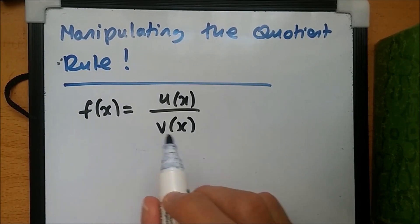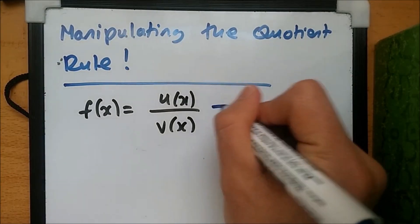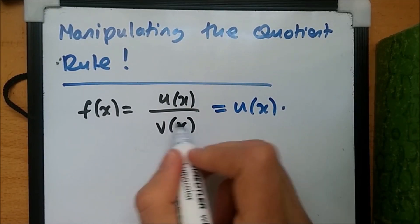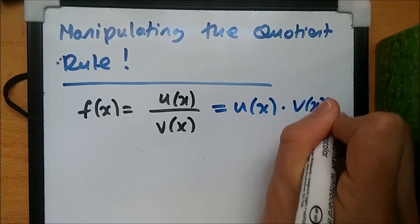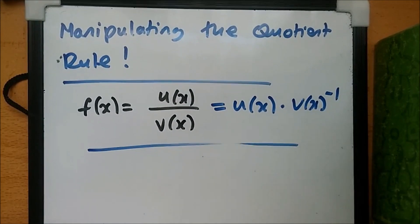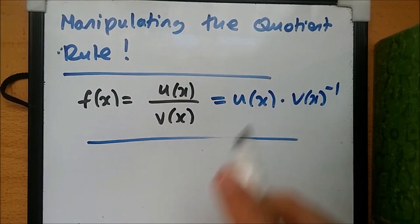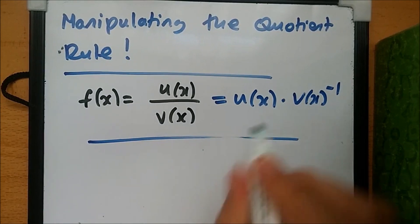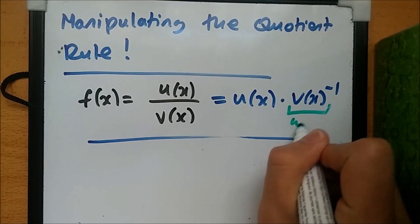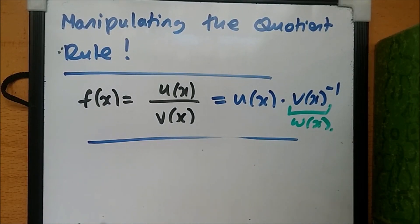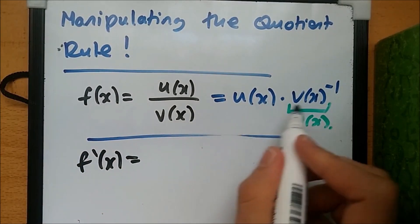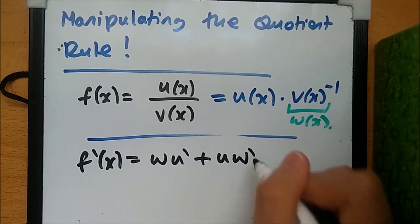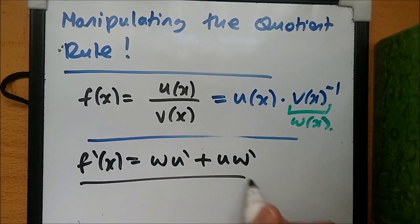Instead of using the quotient formula, you can bring the denominator v(x) up to the top line as v(x) to the power minus one, making it a product. You can then apply the product rule directly. We'll call this new function w(x) to avoid confusion, and the derivative is w times u prime plus u times w prime.